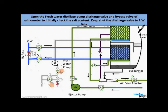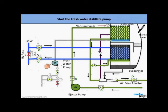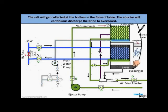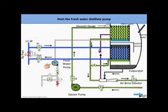Now open the freshwater distillate pump discharge valve and bypass valve of salinometer to initially check the salt content. Keep shut the discharge valve going to freshwater tank. Start the freshwater distillate pump. Check the salt content by tasting the water. Once the salt content decreases, switch on the salinometer and keep the alarm in mute condition. Shut the bypass valve and activate the alarm once the salinometer reading goes below the alarm limit. Open the freshwater tank filling valve. Now the generated freshwater will get collected in the desired freshwater tank.